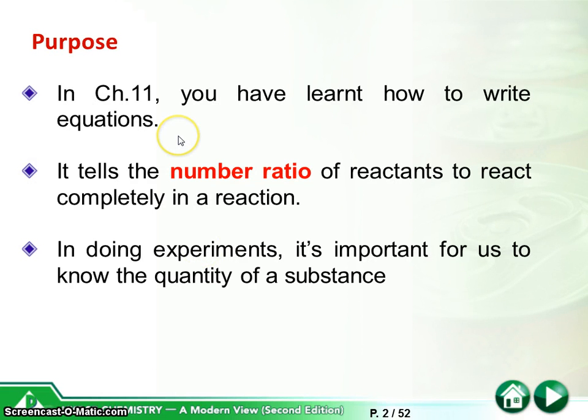In Chapter 11, you have learned how to write equations. Equations tell the number ratio of reactants to react completely in a reaction. For example, when H2 reacts with O2 to give H2O, the equations can be written like 2H2 plus O2 to give 2H2O. This is what we have learned in Chapter 11.